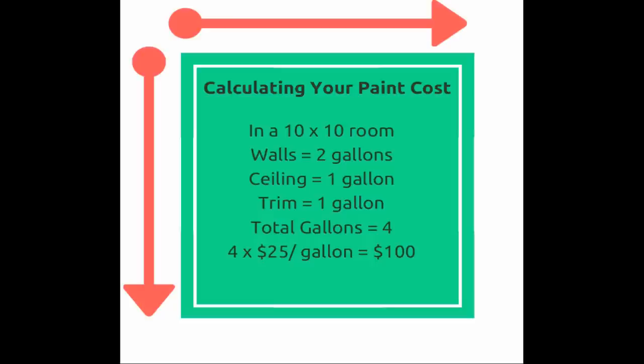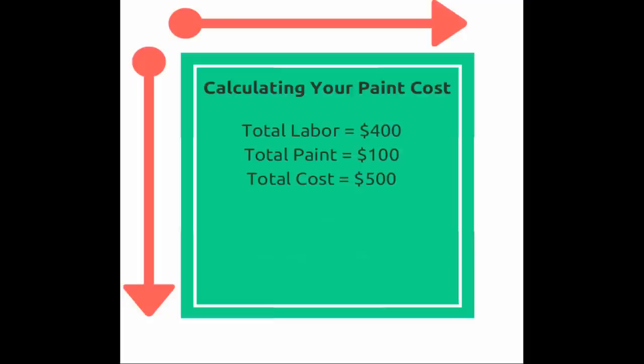Totaling that up — two plus one plus one — we get four gallons for the room. Multiply that by our per-gallon price of about $25, using a standard product like Super Paint or Promar 200 from Sherwin-Williams, or a comparable product from Benjamin Moore or PPG. That gives us a $100 paint cost. Adding labor of $400 plus $100 in paint gives a total cost to the customer of $500.